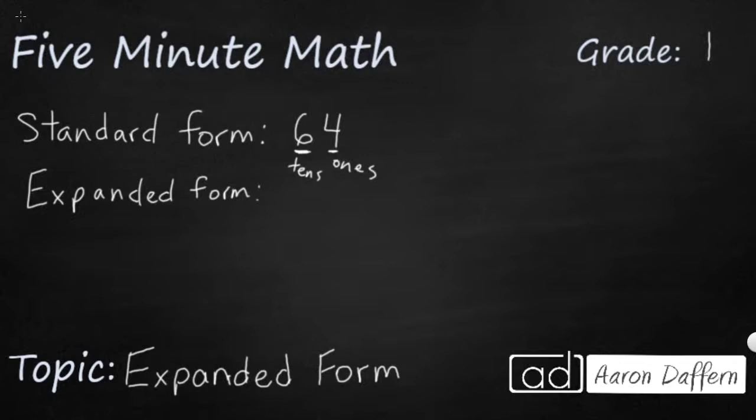So what expanded form does is it takes those and it shows you what those are. So let's take this 6 tens. If we skip count by tens, 10, 20, 30, 40, 50, 60. So 6 tens is really worth 60.